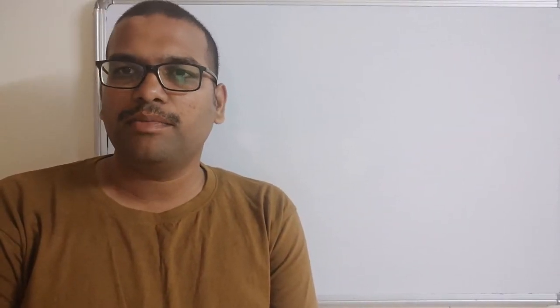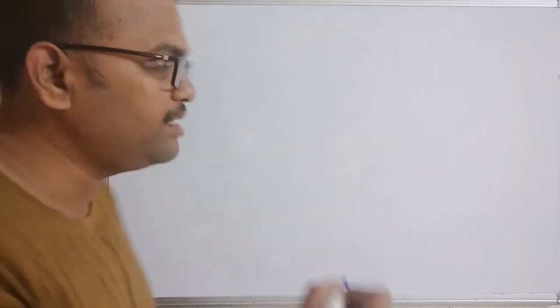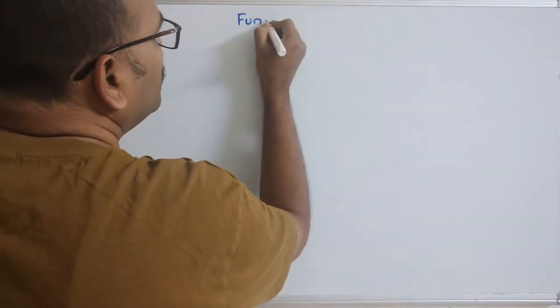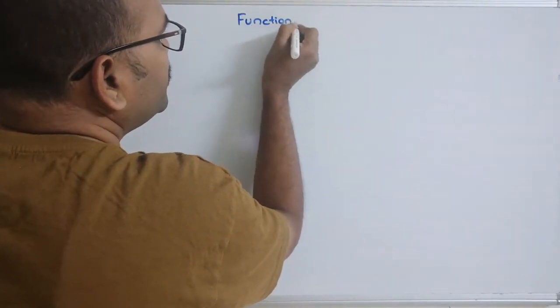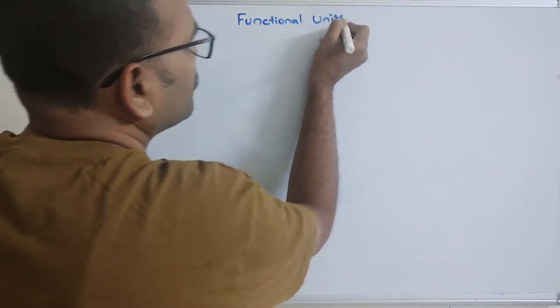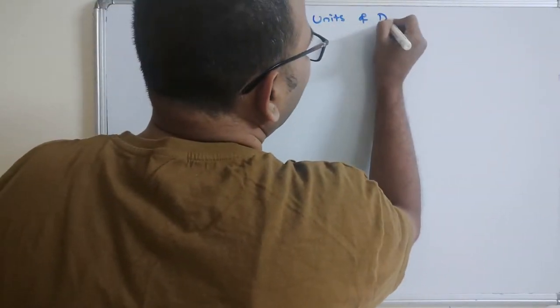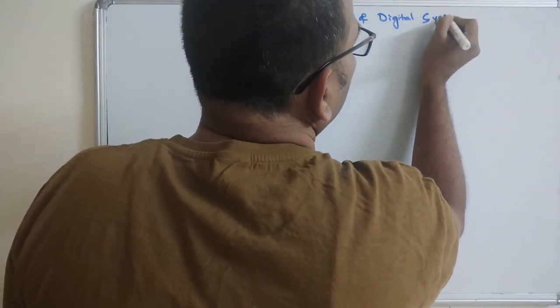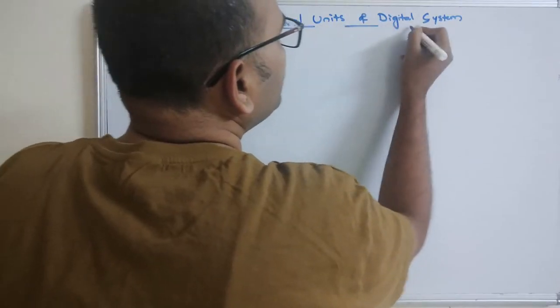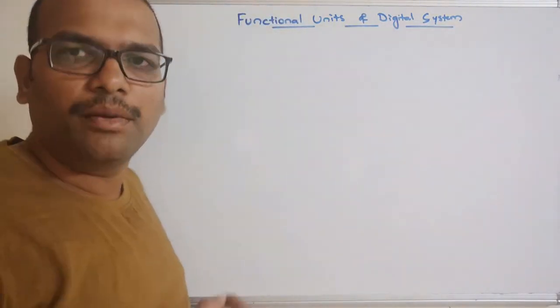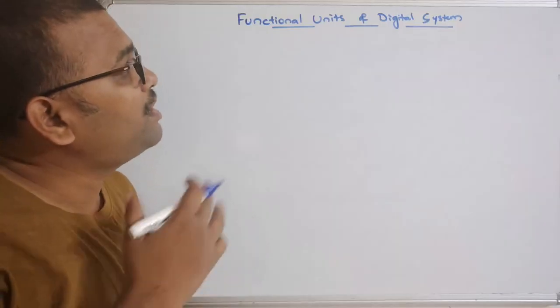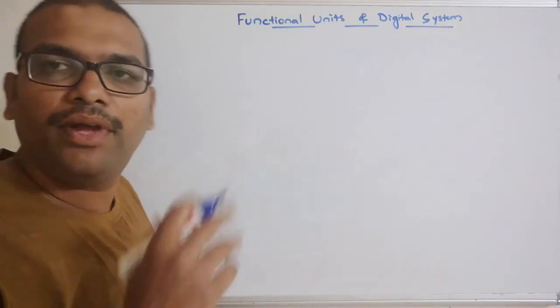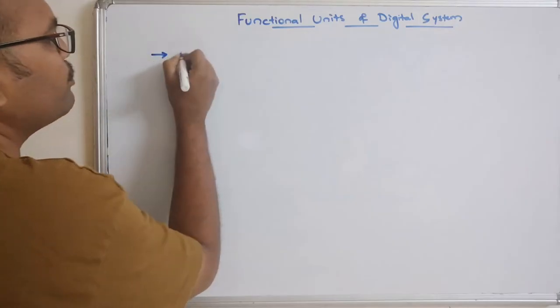Hello friends, welcome back to our channel. In today's session we'll discuss one more concept in computer organization: the functional units of a digital system. A computer is one best example of a digital system, so we can say these are the functional units of a computer.